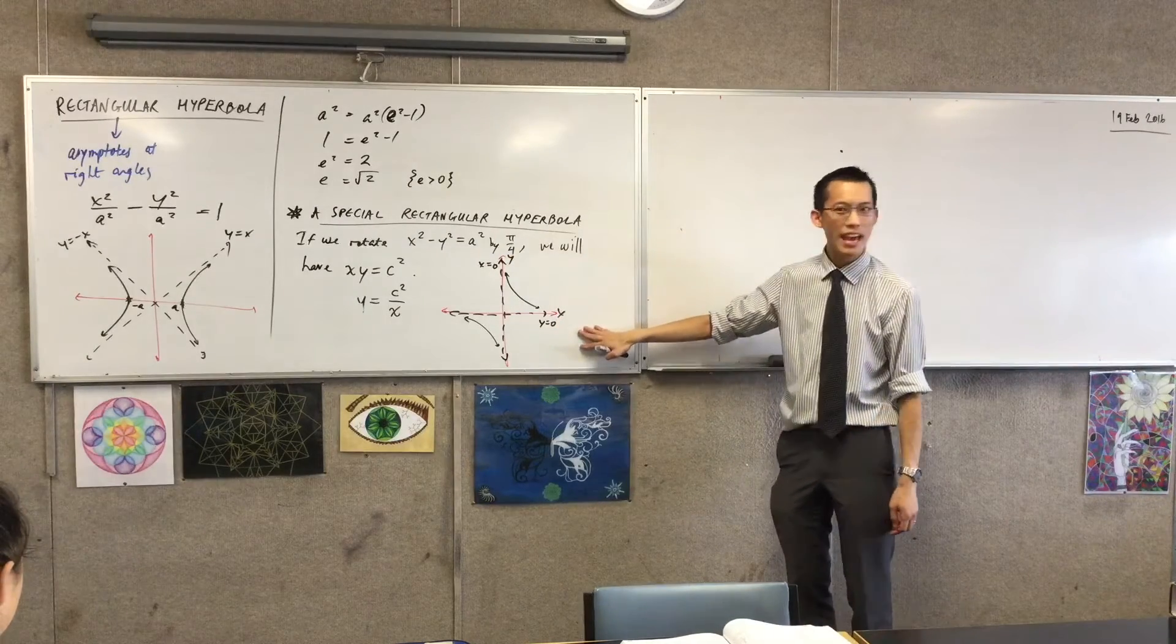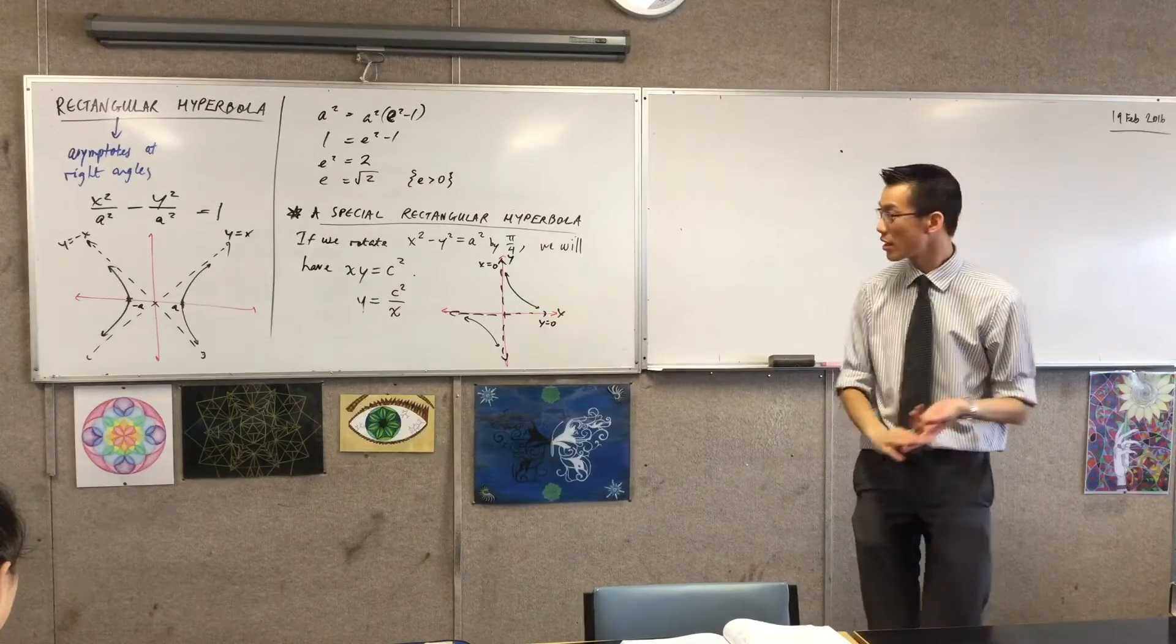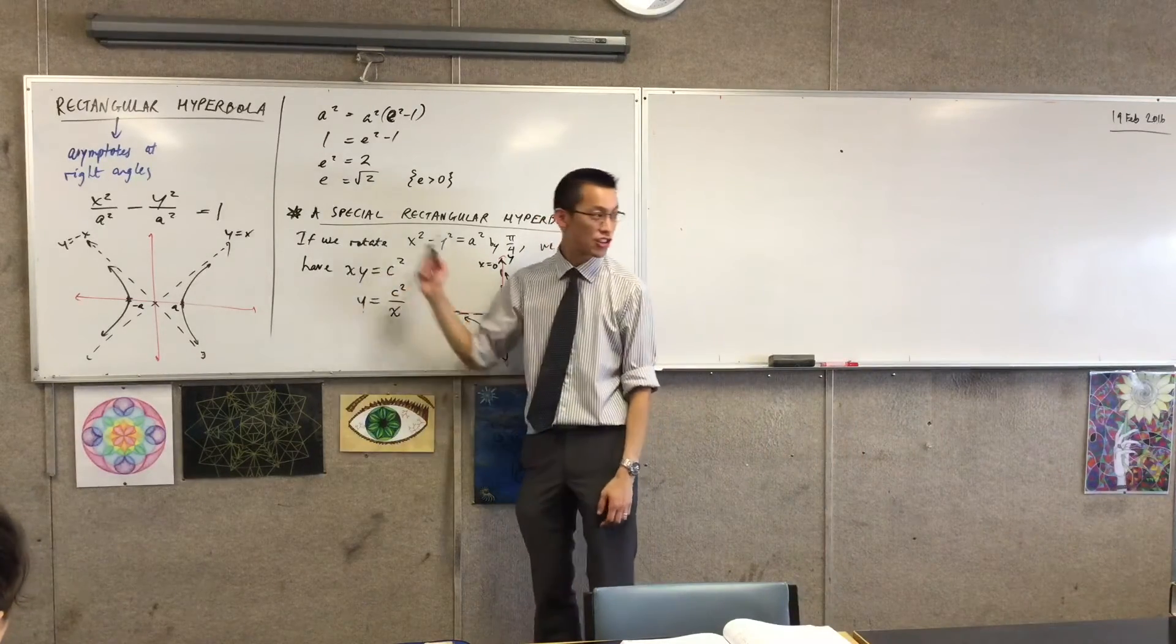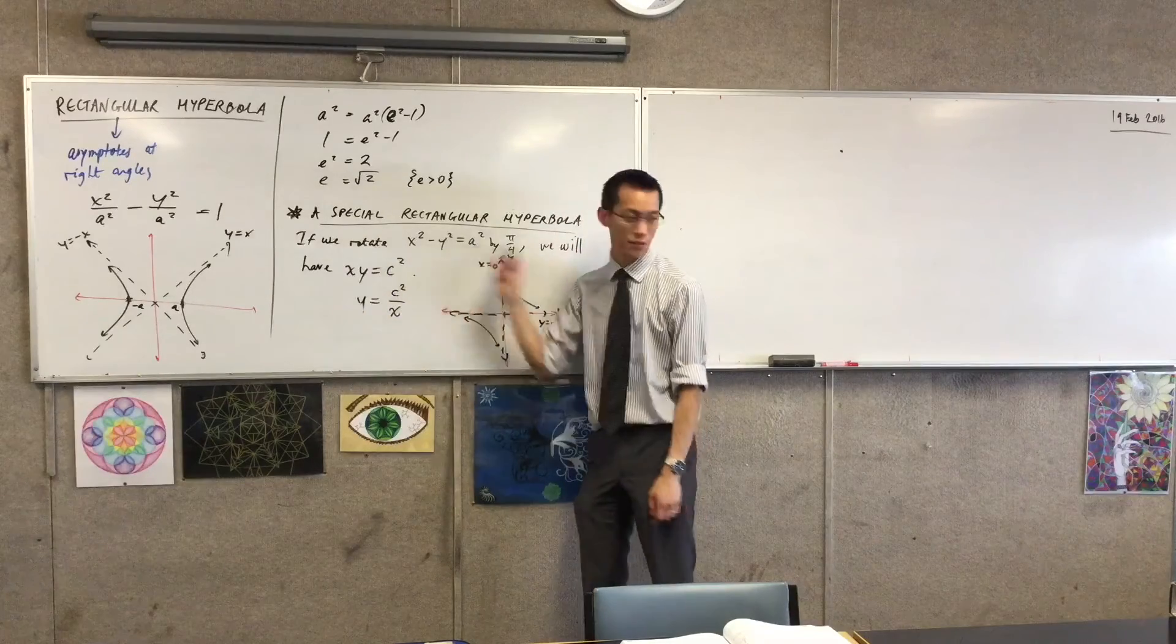Now you can still work out everything from this. You can still work out all of the different features, but it just looks a bit different because the form of the equation is so drastically different to this.